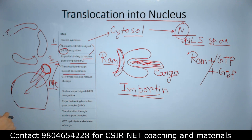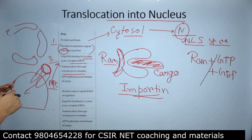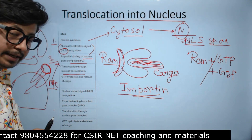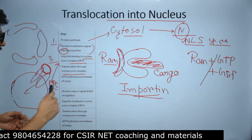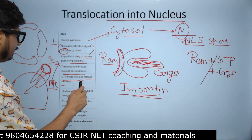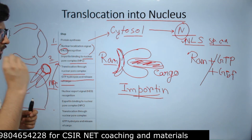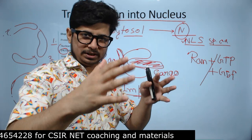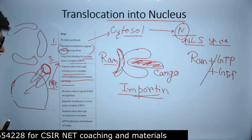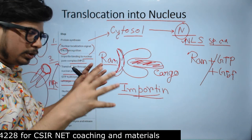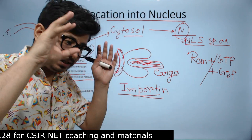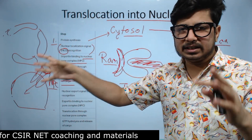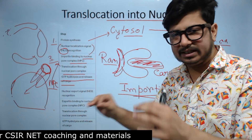Right after the importin binds to the nuclear pore complex, the initiation of protein translocation from the cytosol to the nucleus starts. After the protein is translocated inside the nucleus, the GTP gets hydrolyzed and releases the cargo. So after protein translocation is done, GTP hydrolysis takes place to release the cargo protein inside the nucleus.